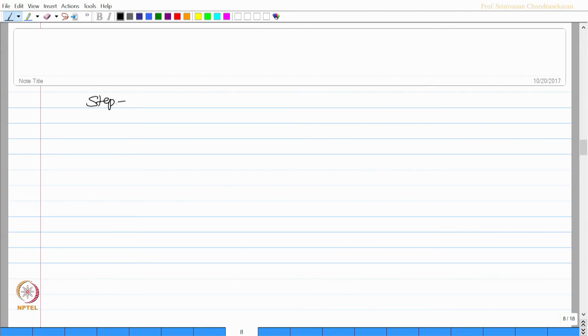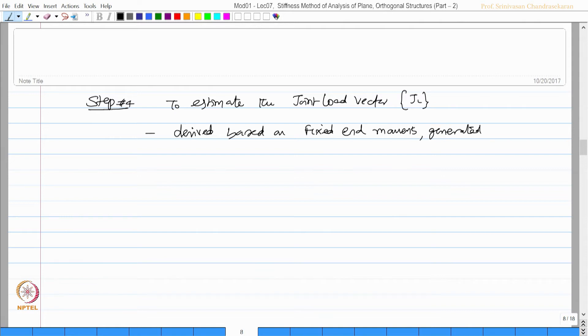Step number 4 should be to estimate the joint load vector JL_u and JL_r. In fact, we should say joint load vector JL, which is actually derived based on the fixed end moments generated from the applied loads on each member.